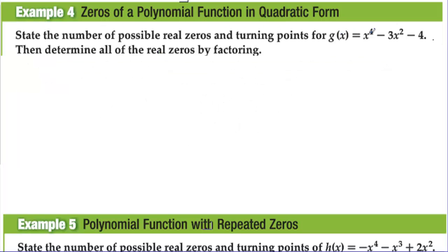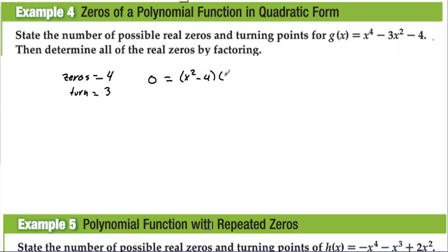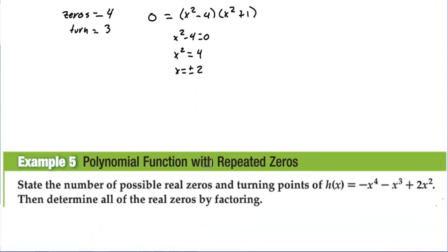For g(x), a degree-4 polynomial, there are up to 4 possible distinct zeros and 3 possible turning points. Factoring gives (x² − 4)(x² + 1). The factor x² + 1 can never equal zero, but x² − 4 = 0 gives x = ±2 using square roots. So there are only 2 distinct real zeros, even though 4 was possible.